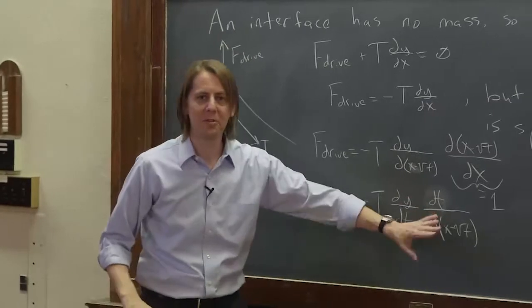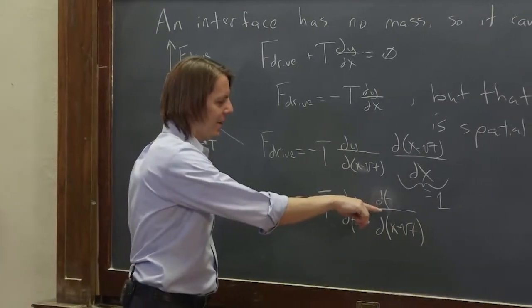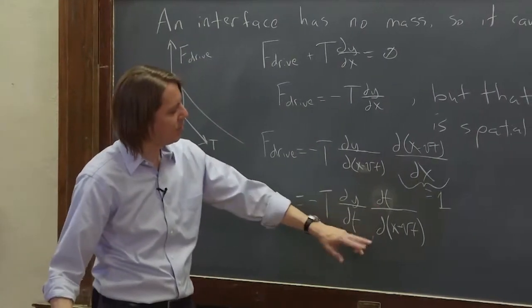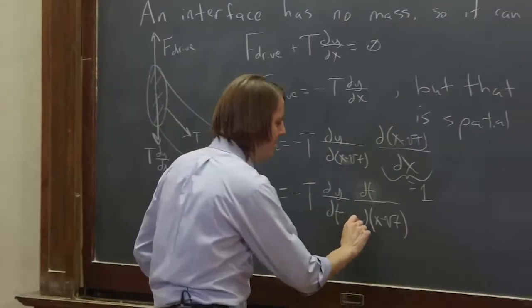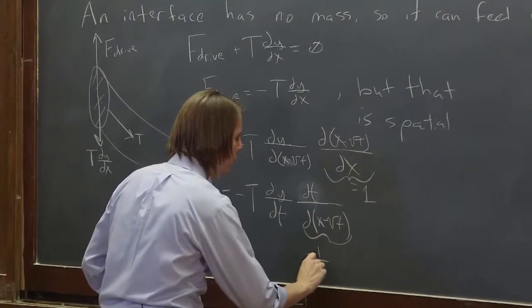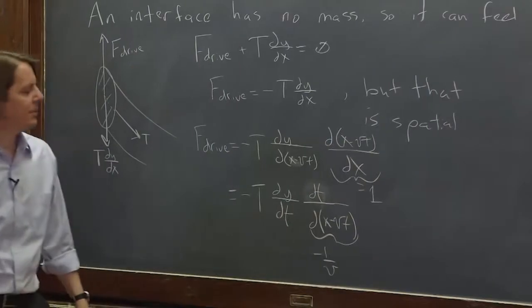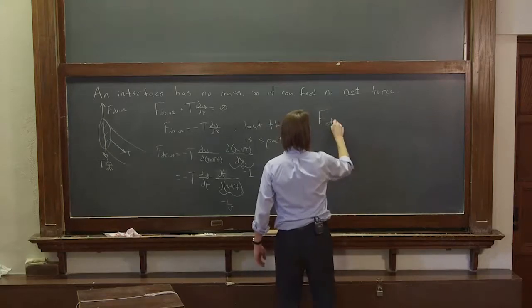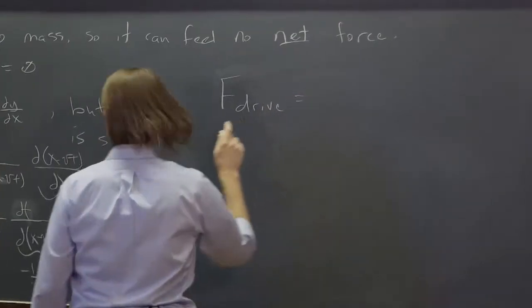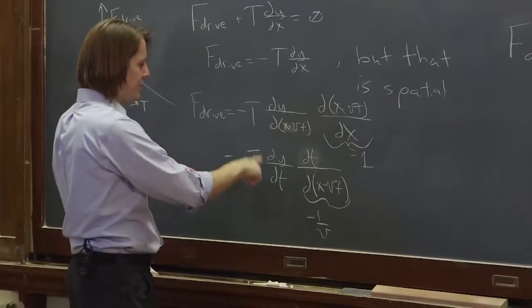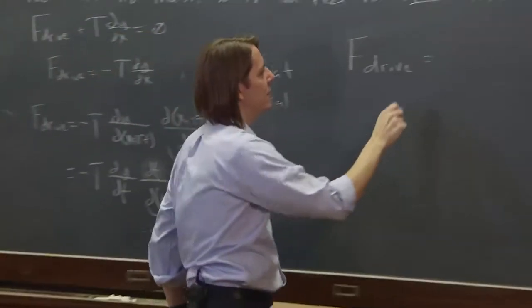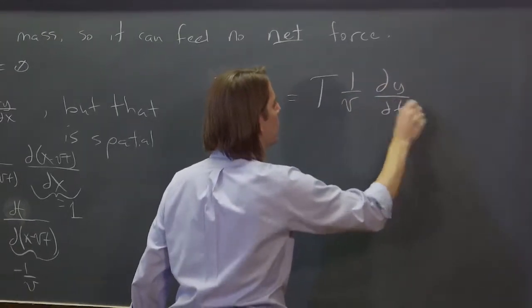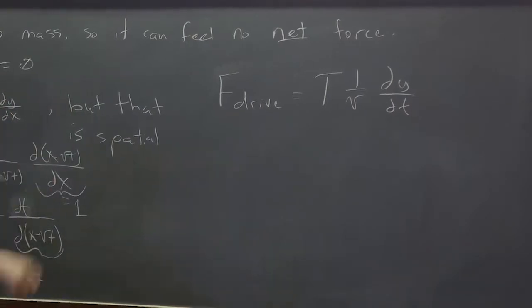You can do it upside down like this, right? That's allowed. And then this is equal to what? Well, if we turned it over it will be minus v, so this must be equal to minus 1 over the velocity in the medium. So we put all that together and we get F drive - and the two minuses make a plus - it's tension times 1 over velocity times dy/dt. That's the force it takes to launch a wave.